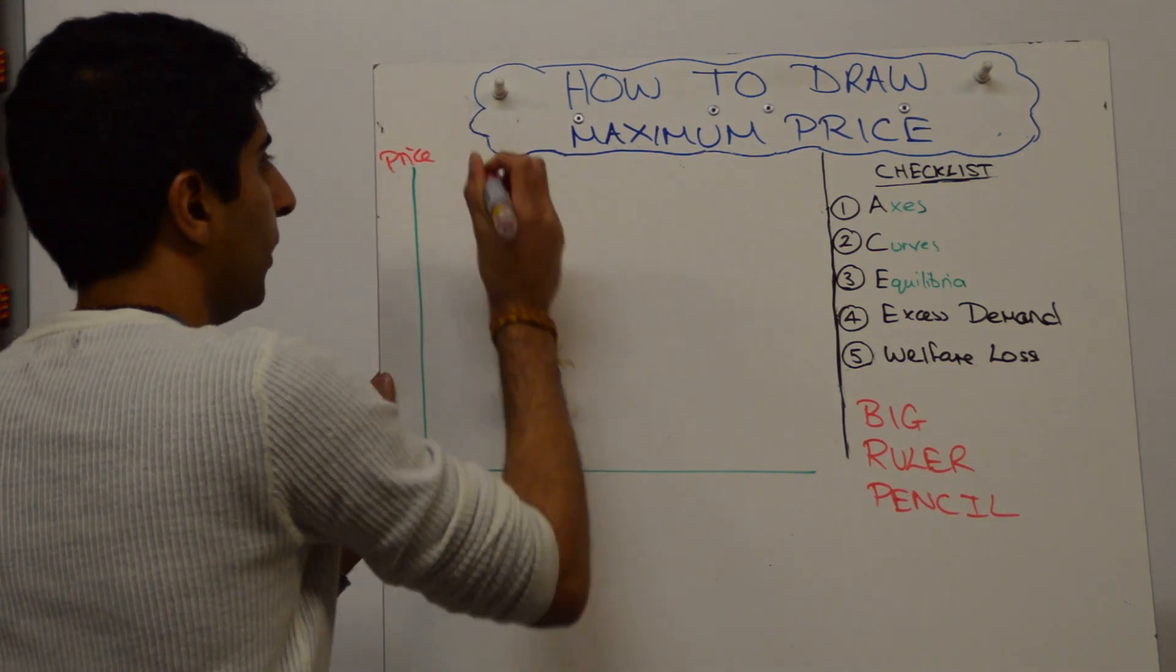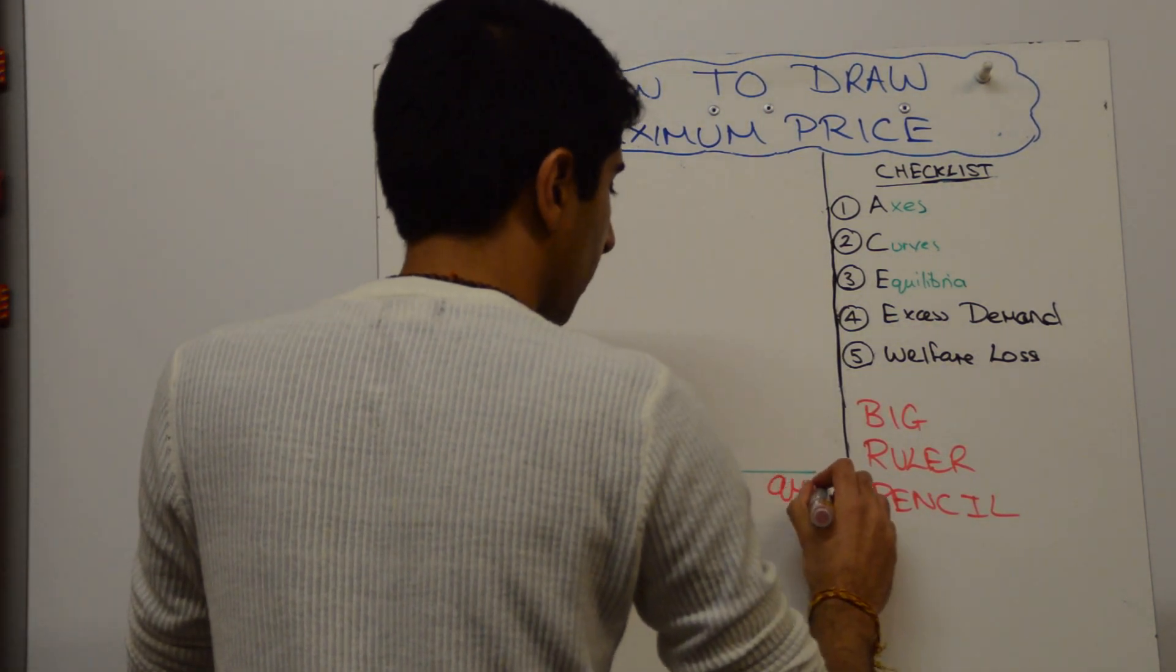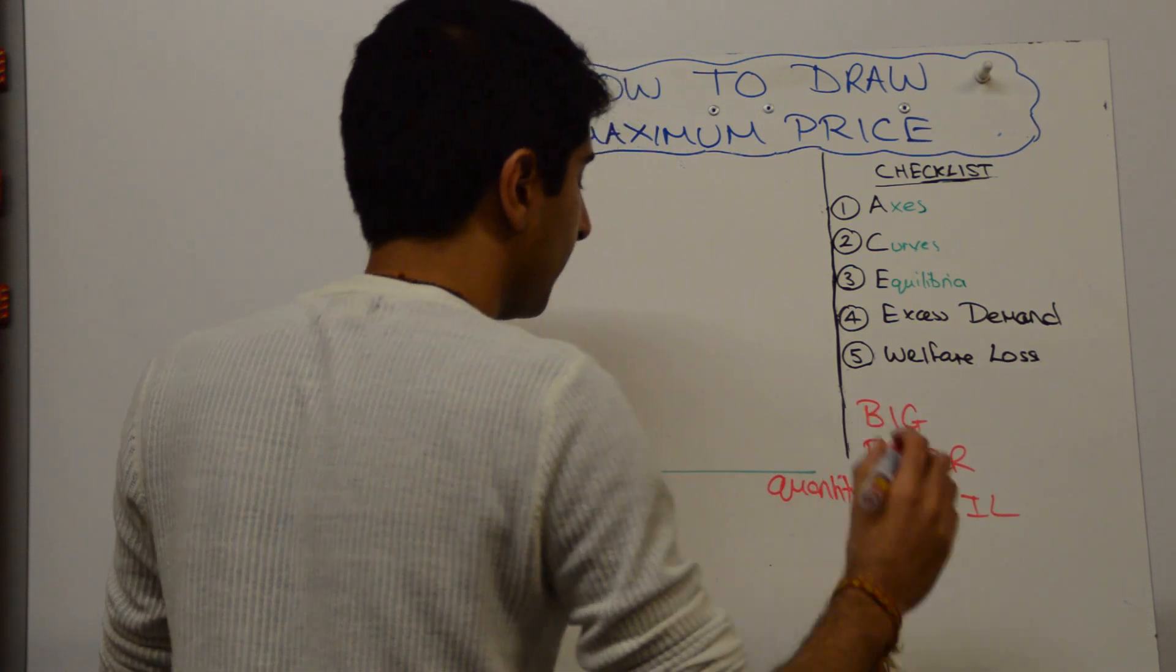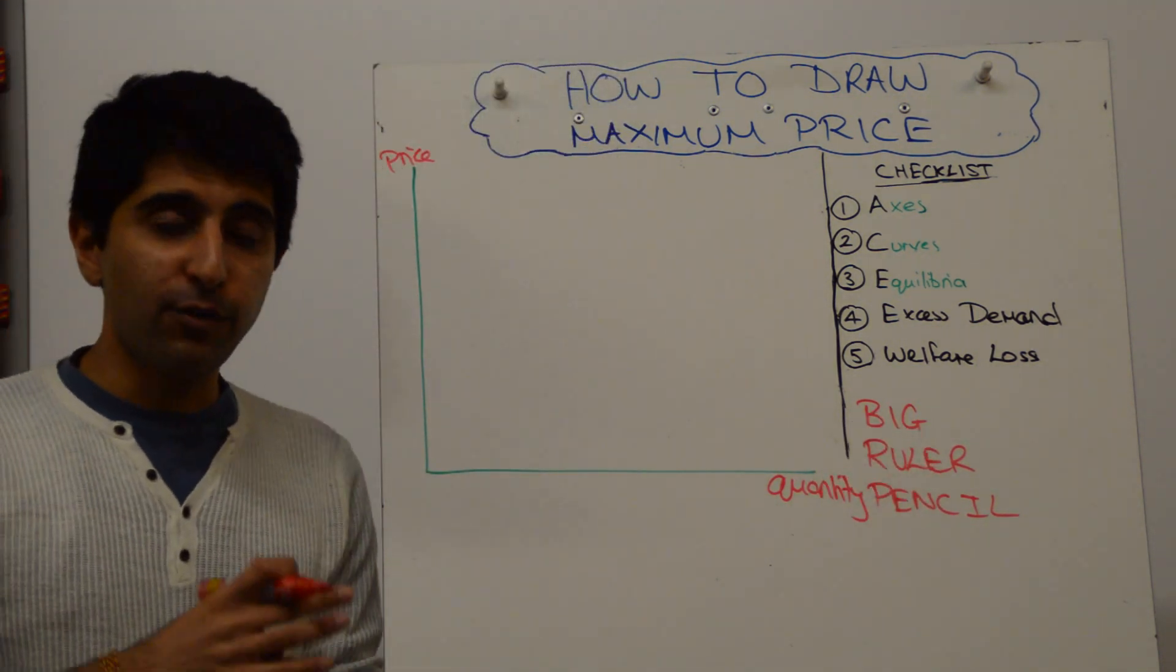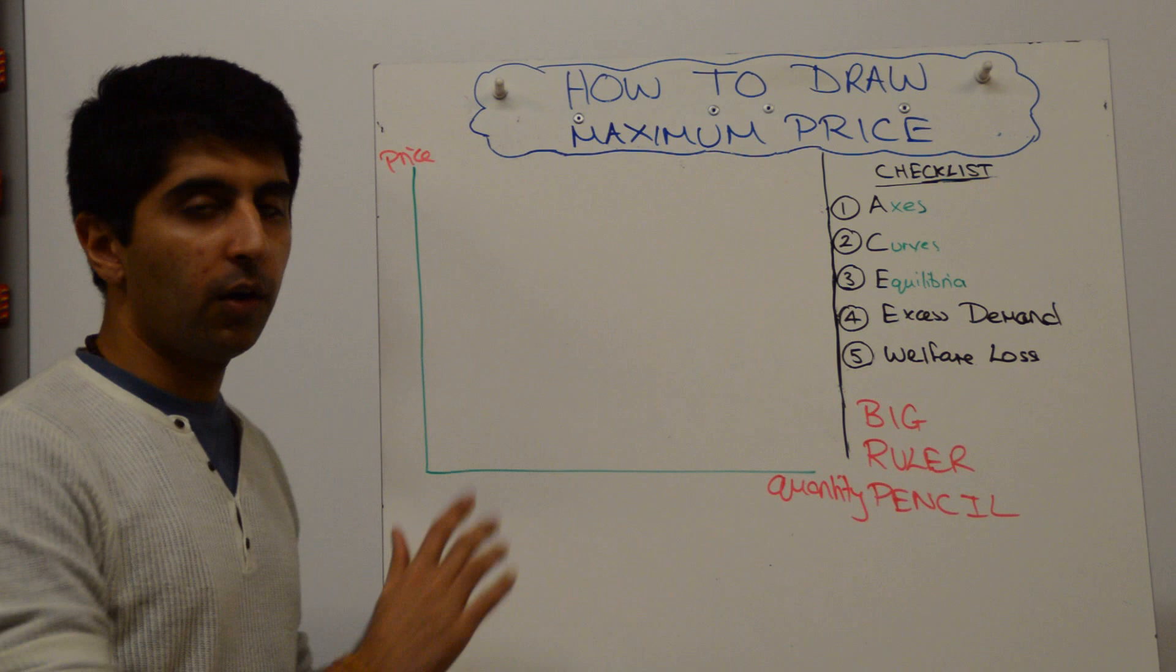So we've got price, we have got quantity, simple as that. Again, if you have the market, then apply on the axis.